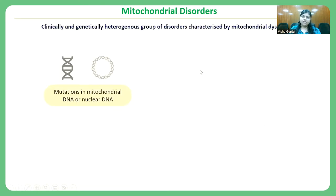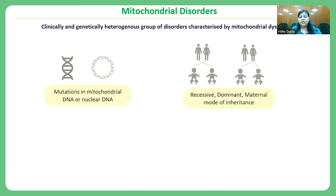Mitochondrial disorders are a clinically and genetically heterogeneous group of disorders, with many overlapping symptoms and many genetic causes. Mutations in any of the mitochondrial genes, or in any of the more than 1,000 nuclear genes known for mitochondrial function, can lead to mitochondrial disorders. Because of this dual genetic control, mitochondrial disorders can follow any mode of inheritance — recessive, dominant, or maternal.